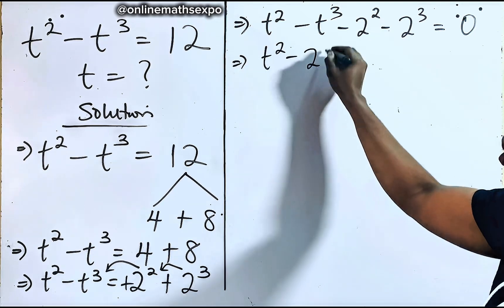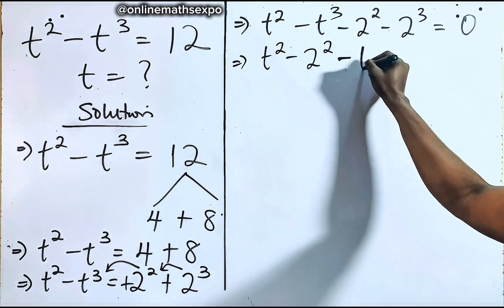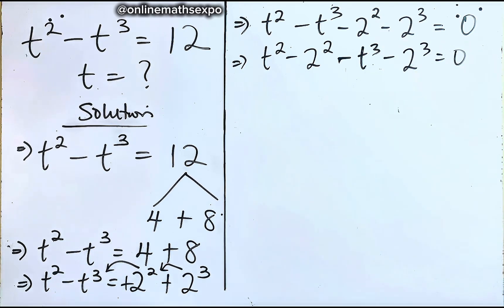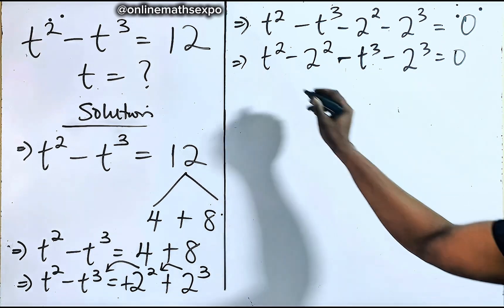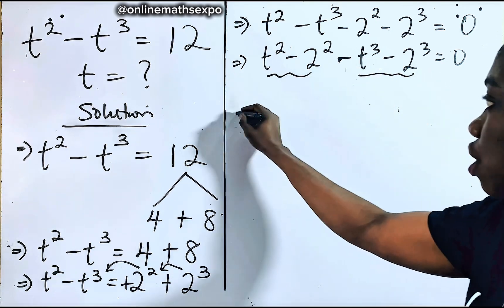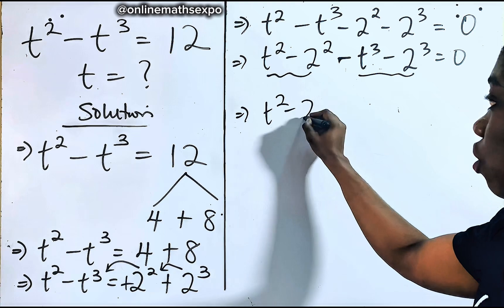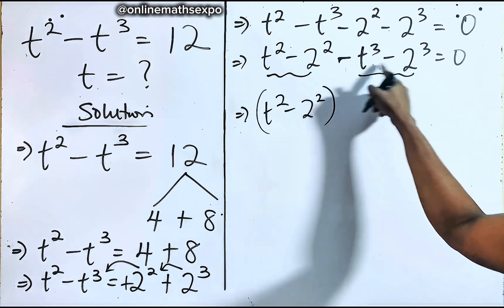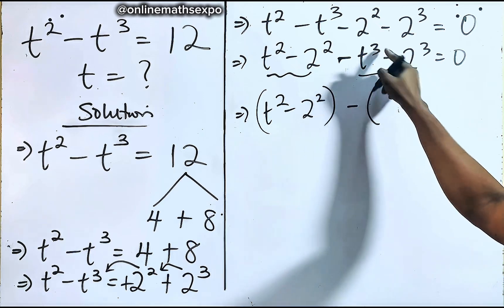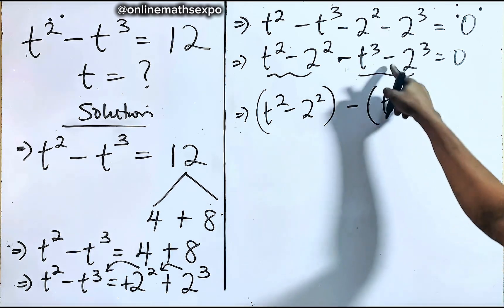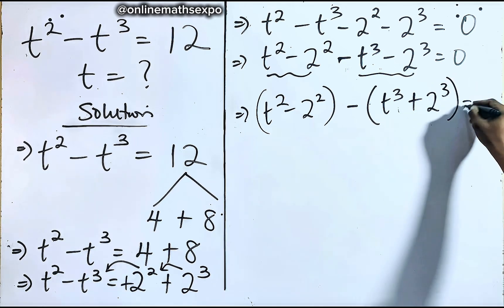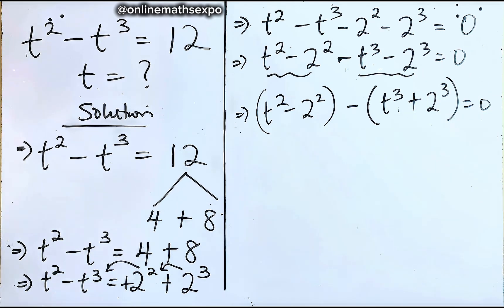We collect terms of the same powers together: t squared minus 2 squared, then minus t cubed minus 2 cubed, equals 0. For the cubic group, we factor out a negative sign, leaving t cubed plus 2 cubed inside the bracket.